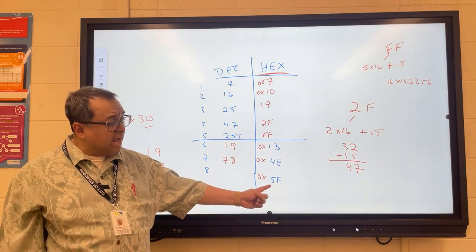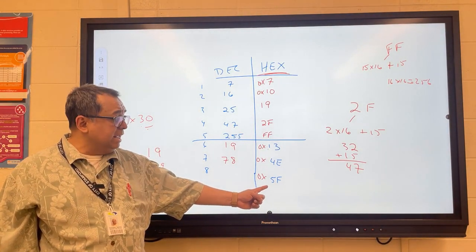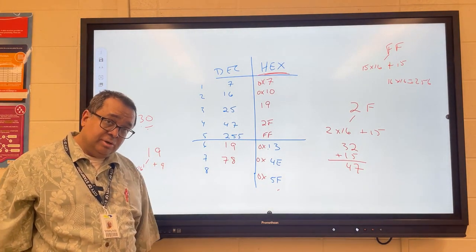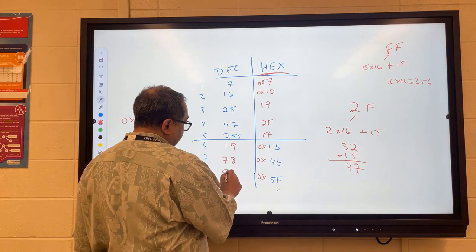And 5F, that's 5 times 16. That's 80. And then another 15. So I think that's how much? Yes, sir? I think that's 95. I think that's 95. Okay.